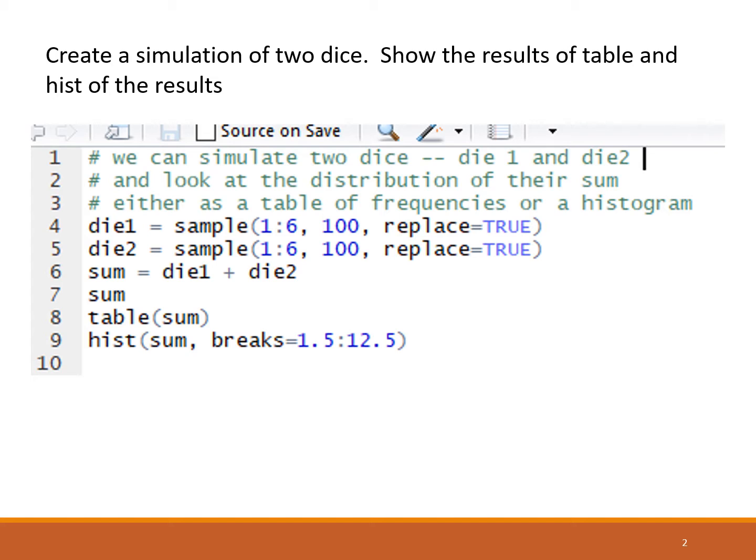In line five, we do the same thing but call it die2. So that is the simulating of two dice. In line six, we are adding the two dice to get sum. Remember that die1 and die2 are vectors, and so we add them and get another vector. Sum is a vector of values.